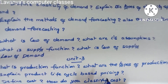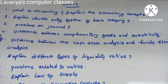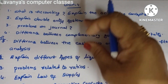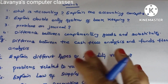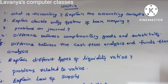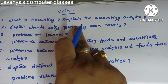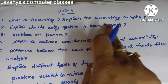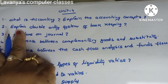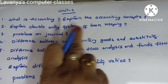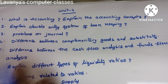Next, important questions in unit four and unit five. These questions are coming from either unit four or unit five. First question: what is accounting? Explain the accounting concepts. Next: explain the double entry system of bookkeeping — an important question.